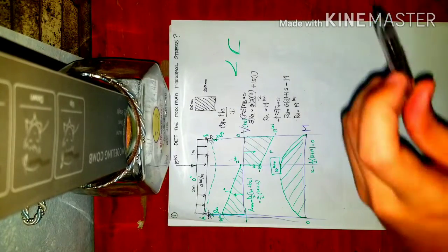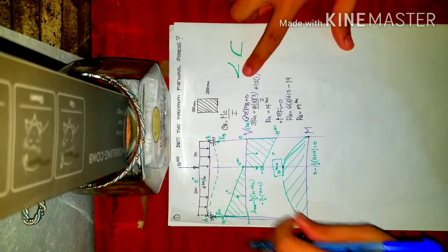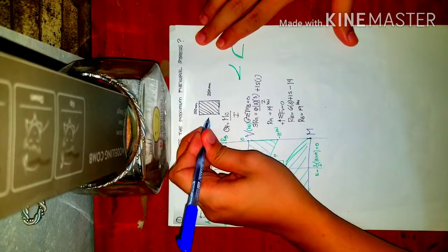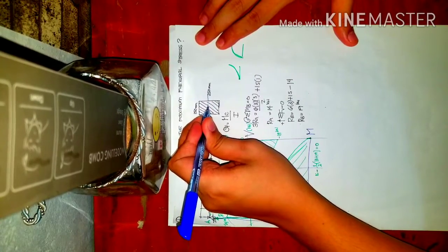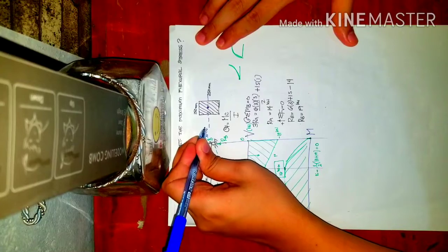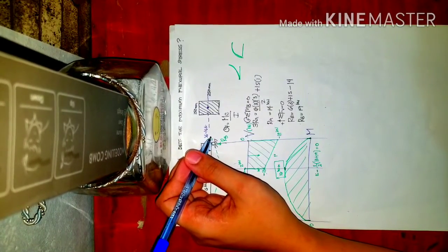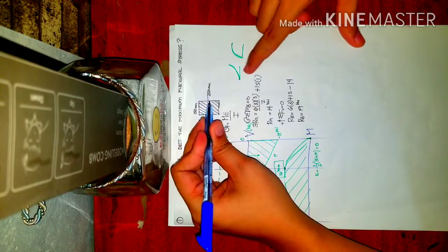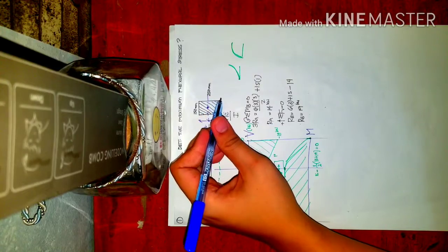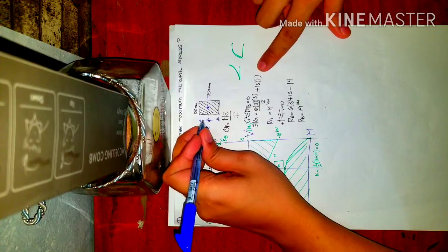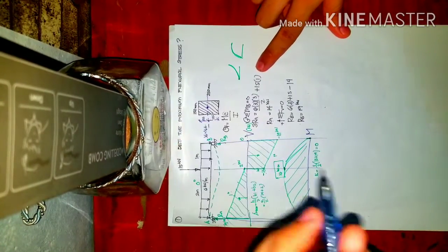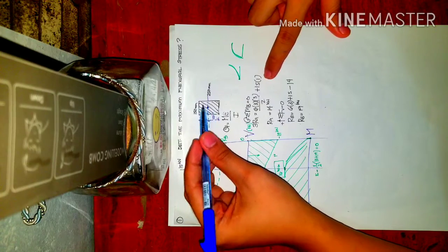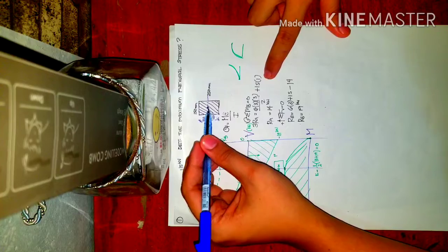Now we solve for C and the moment of inertia I. Since the cross-section is symmetric, the centroid (neutral axis) is at the mid-height. So C = 250/2 = 125 mm. For the moment of inertia of a symmetric rectangle: I = bh³/12 = 150 × 250³ / 12. There is no AD² term since the centroid coincides with the neutral axis.